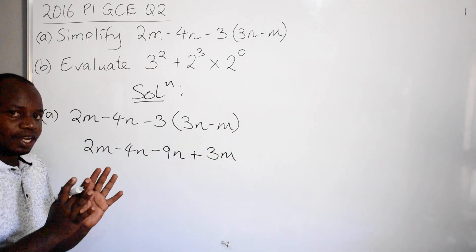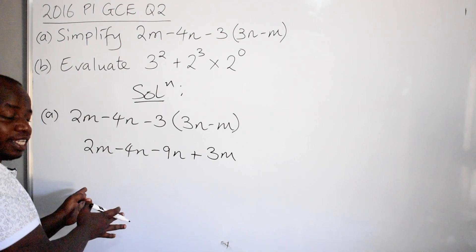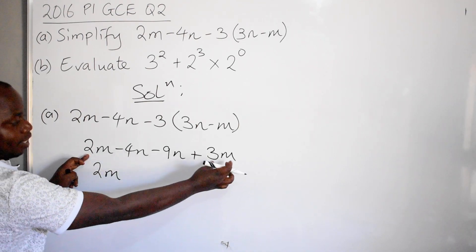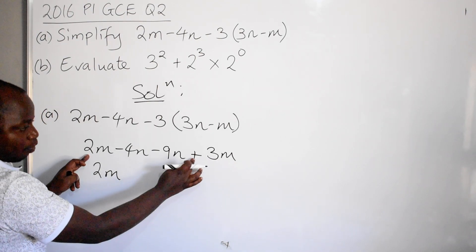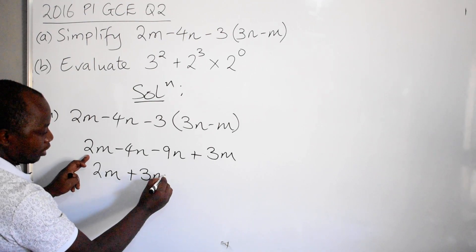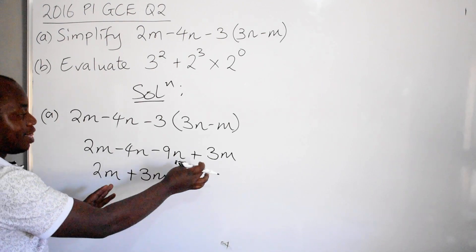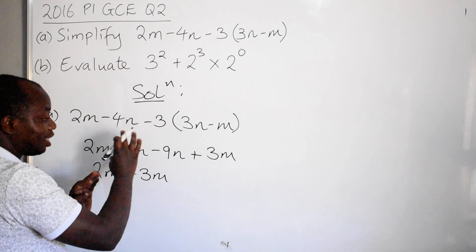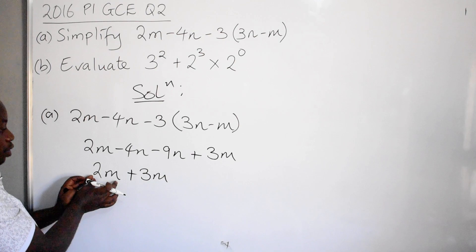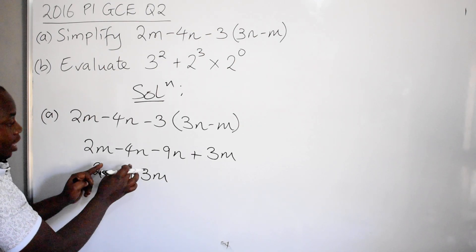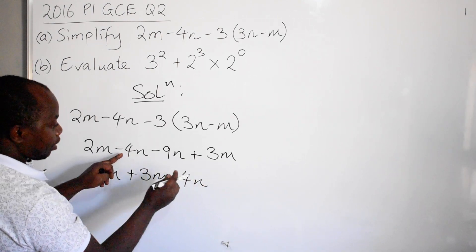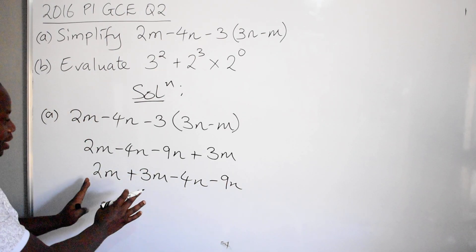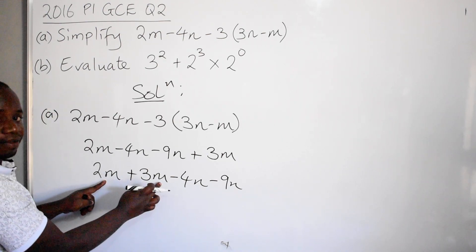At this stage you collect like terms together — m on one side, n on the other side. So we write 2m. Where is its pair? It is positive 3m, so you bring it here. It must be copied the way it is — no change of sign — because this is not an equation, it is an expression. Then we have negative 4n, and the other n term is negative 9n.